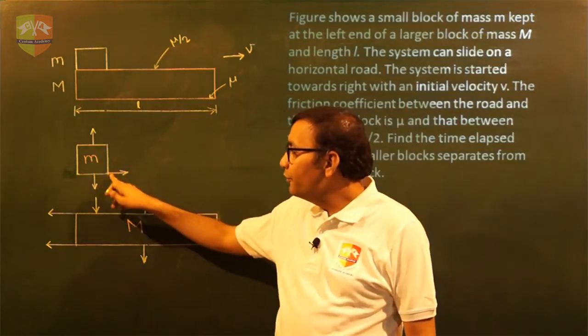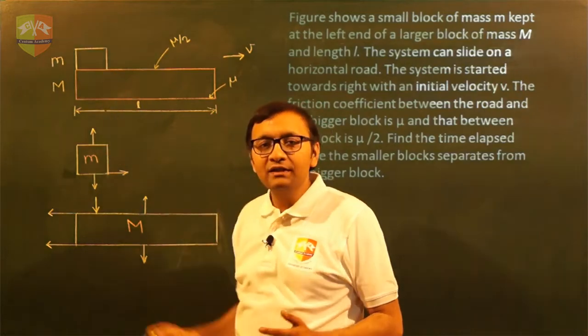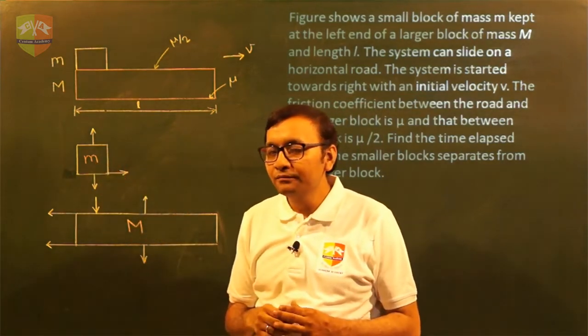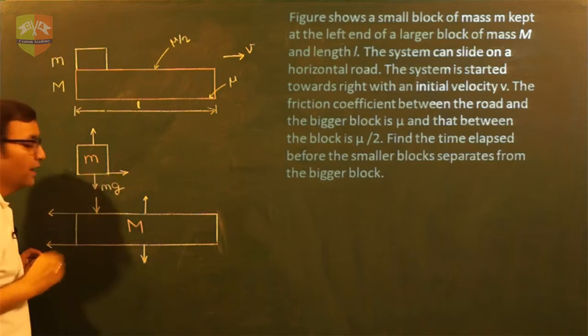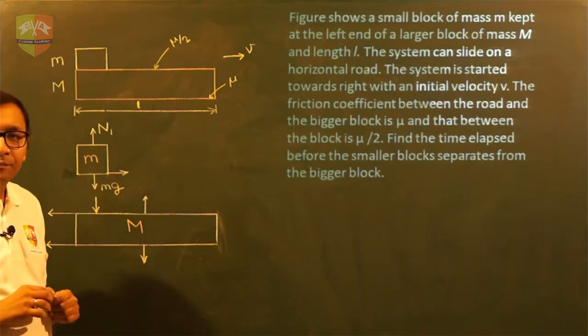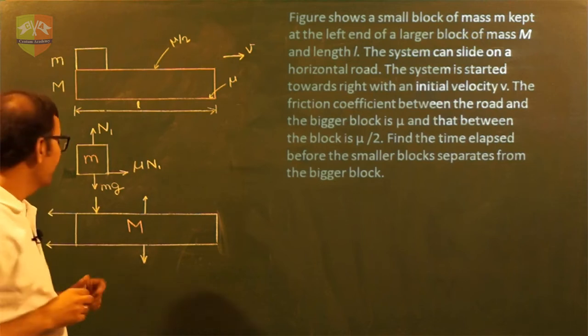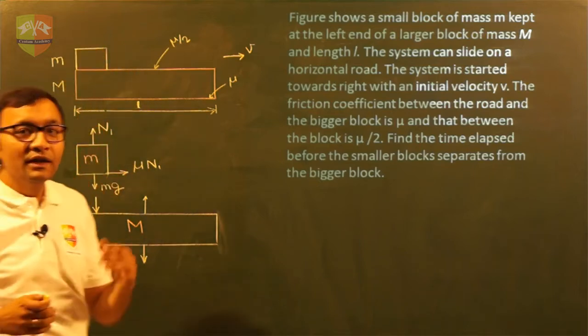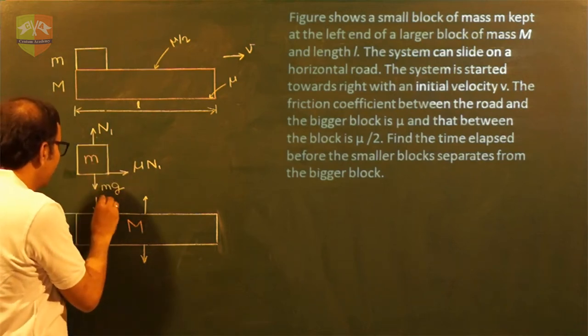So now let us take one by one these two masses and will represent all the forces and acceleration. If you take a small m mass, what are forces will be applied on it? There will be a gravitational force, its value will be mg, and there will be normal reaction between capital M and small m, N1, and then there will be a friction mu times N1. This force, since this normal reaction is applied by capital M on small m, the small m also applies normal reaction in opposite direction.